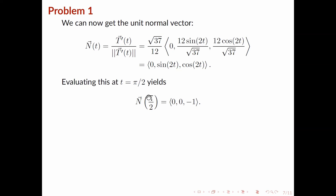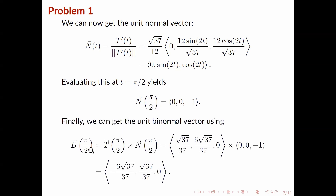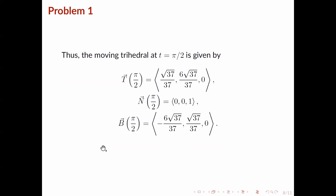Lastly we need the unit binormal vector. This time we can go straight to B at pi over 2, because this is simply defined as the cross product of T at pi over 2 with N at pi over 2. Since we already know T of pi over 2 and N of pi over 2, we simply substitute those in and take the cross product. After taking the cross product you should get this vector. Thus the moving trihedral at t equals pi over 2 is given by these three vectors — note there's a typo, that should be negative 1.